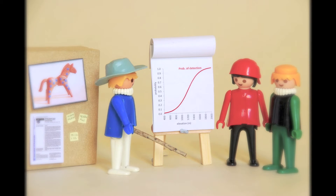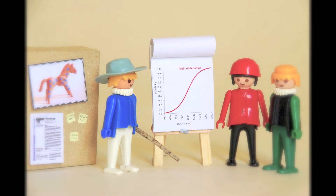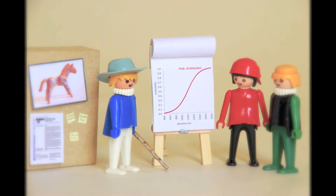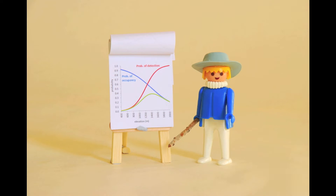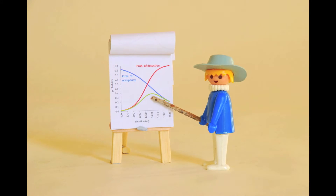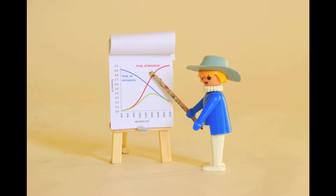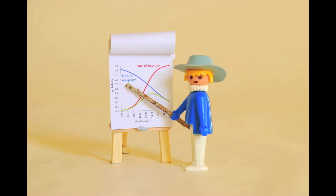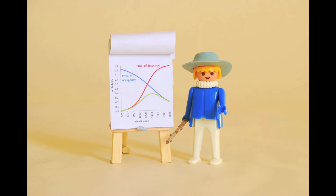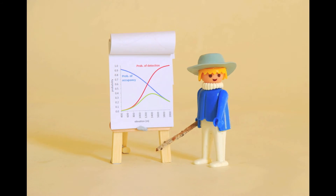Yes, that's right. There are statistical models that account for imperfect detection, and fortunately the way we recorded our data will allow us to use these tools. And so we did, and found that our original estimates had been capturing the combined effect of occupancy and detection. Our new set of results shows that lower elevation areas provide a much more valuable habitat than we originally thought.